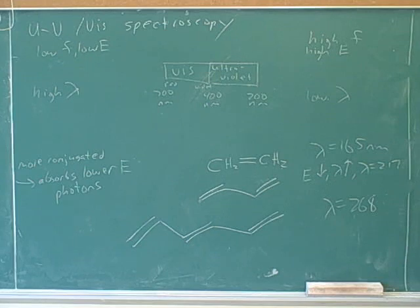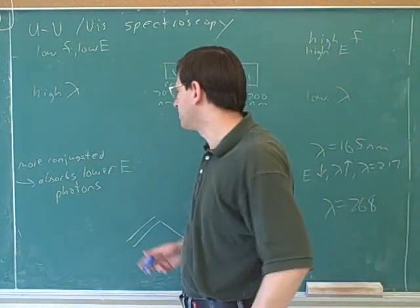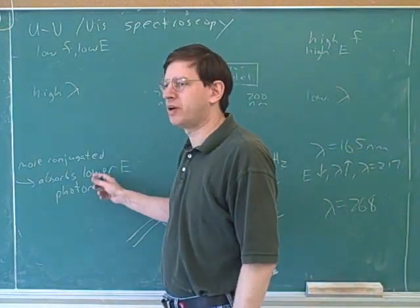All right. So I guess we're just about done with all that I think you really need to know about UV spectroscopy. We've seen that, so you should know what we have on the board. More conjugated means you absorb lower energy photons.